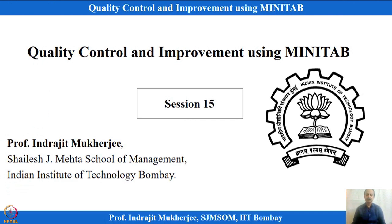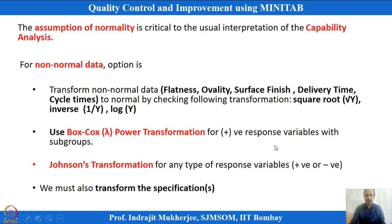Last time we were discussing about process capabilities and in case it is non-normal, what is to be done. We explored some data sets and I mentioned there are two types of transformation available. One is Box-Cox transformation, which is a lambda transformation — an optimal lambda transformation. If the CTQ is represented as Y, then Y to the power lambda — finding the optimal lambda — will transform the data into normality, and then we can analyze process capability. We will now extend that lecture to see how this transformation works in capability analysis when subgroup size is involved.